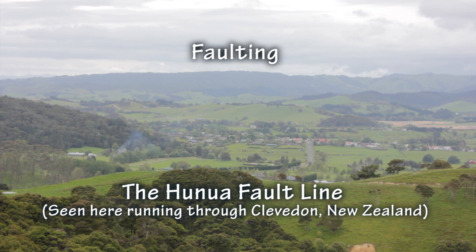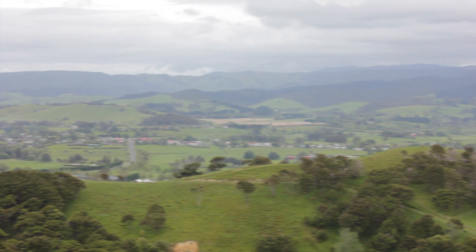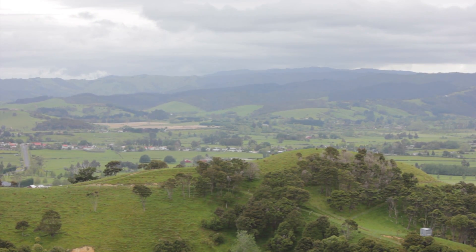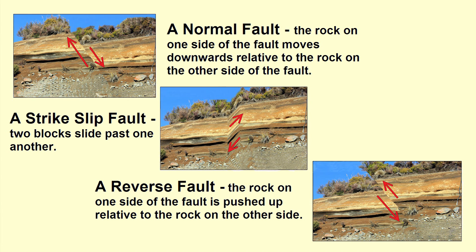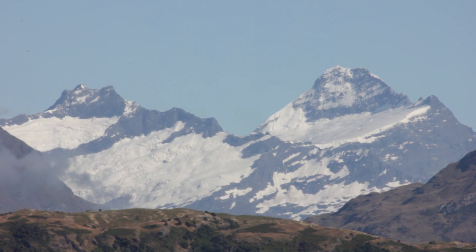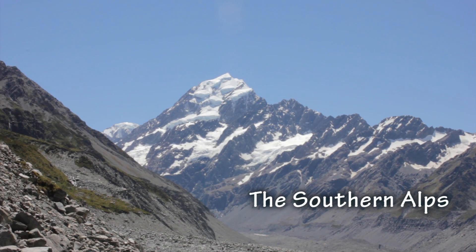Faulting occurs where there is a crack in the Earth's crust known as a fault. Most movements of land by these faults are slow, but a sudden movement can result in an earthquake. Depending on the direction of movement, land can move in an upwards, downwards or sideways direction. For example, the Southern Alps of New Zealand have been formed by uplift of land alongside the Alpine Fault.